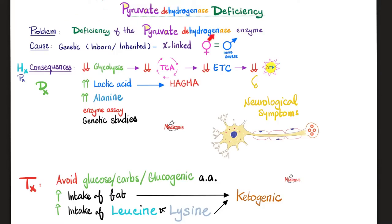Let's summarize pyruvate dehydrogenase deficiency. The enzyme deficiency is pyruvate dehydrogenase complex. The cause is genetic, usually X-linked. Since both females and males have an X chromosome, it can affect both. However, females have two X chromosomes, so the normal X can cover for the abnormal X — sometimes called X chromosome inactivation. Males have only one X chromosome, so if that X is affected, males will suffer more.